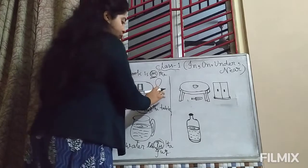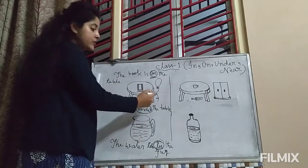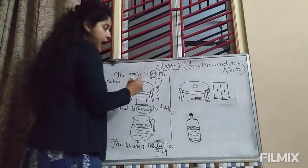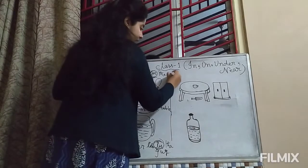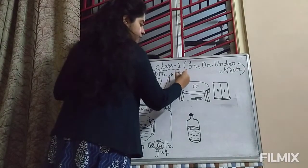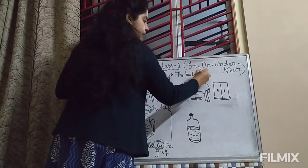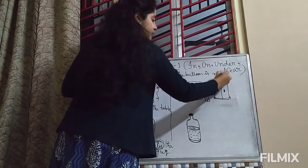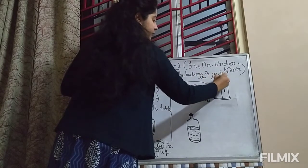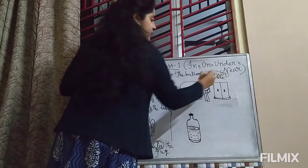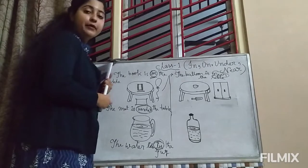Next: near. Where is the balloon? If I ask you where is the balloon, the balloon is near the table. So here the word 'near' is telling us about the position of the balloon.